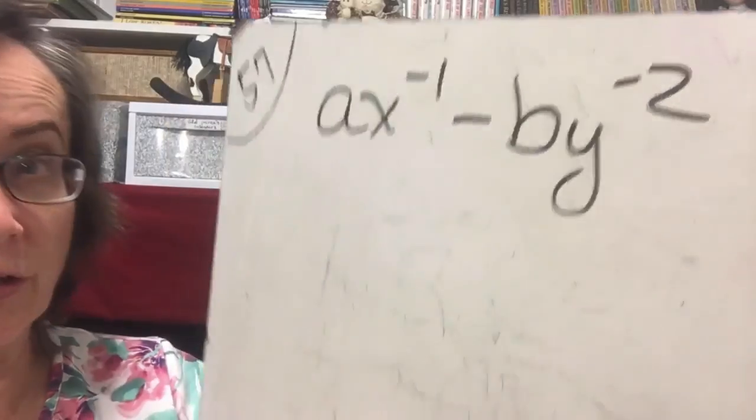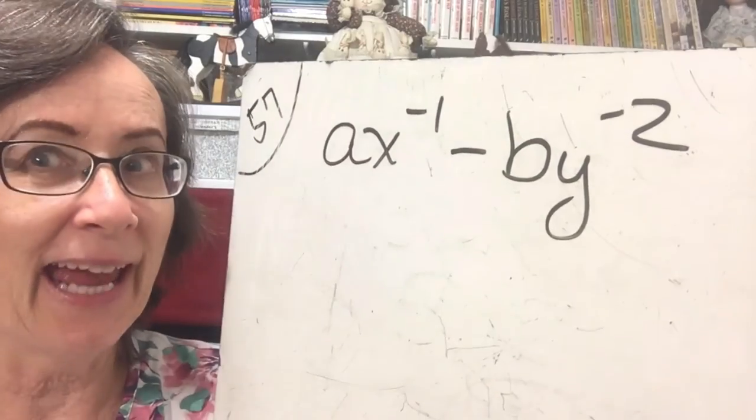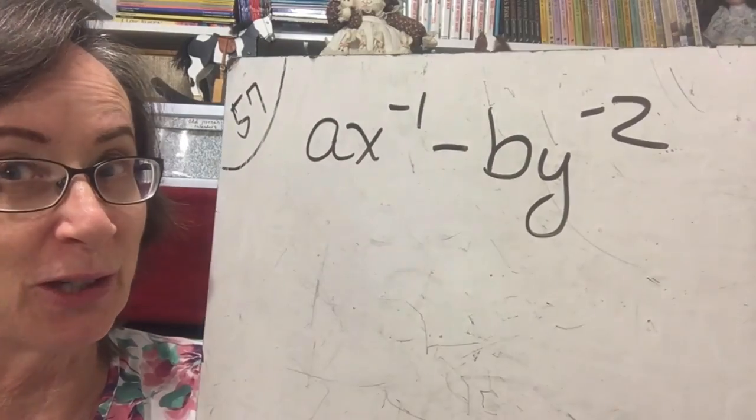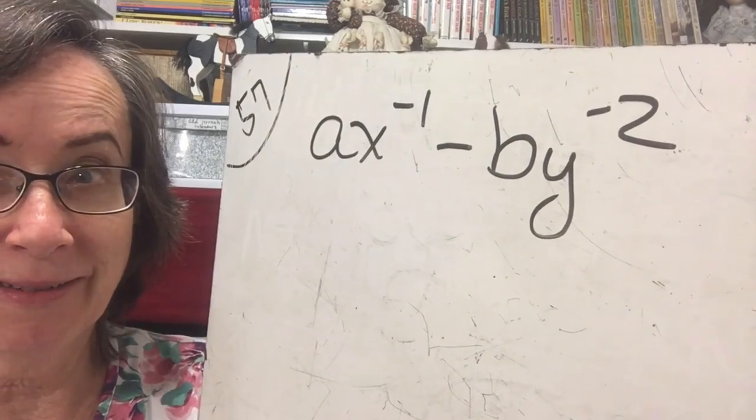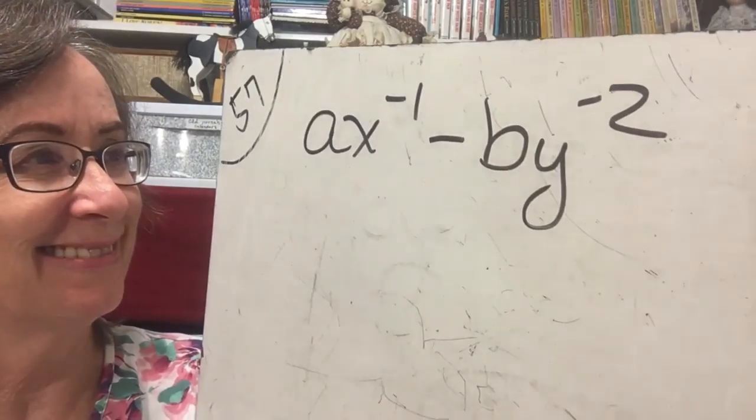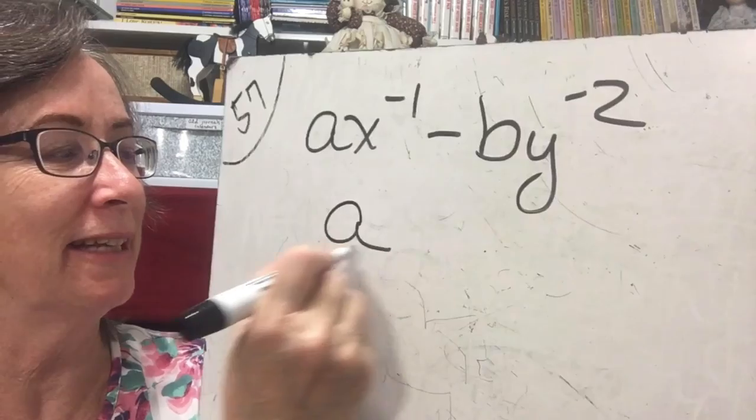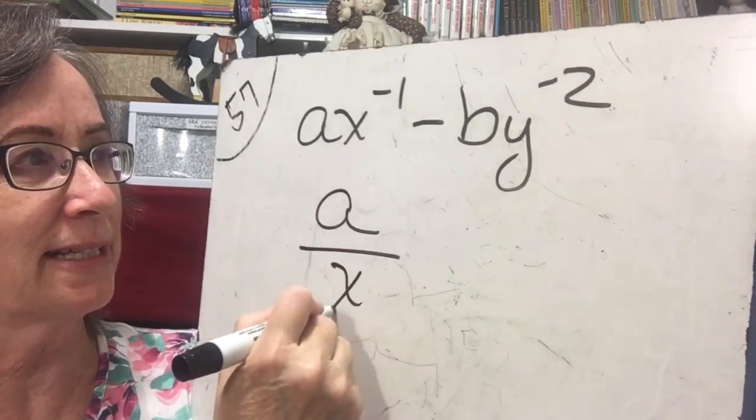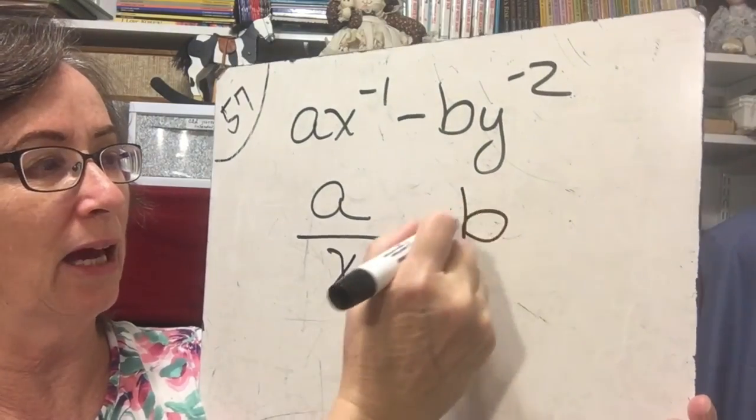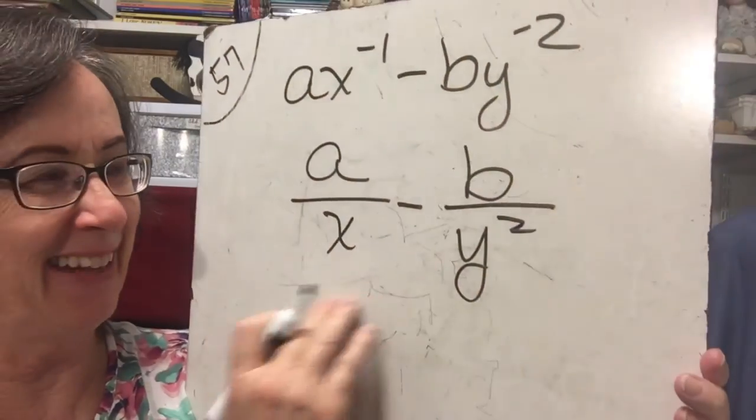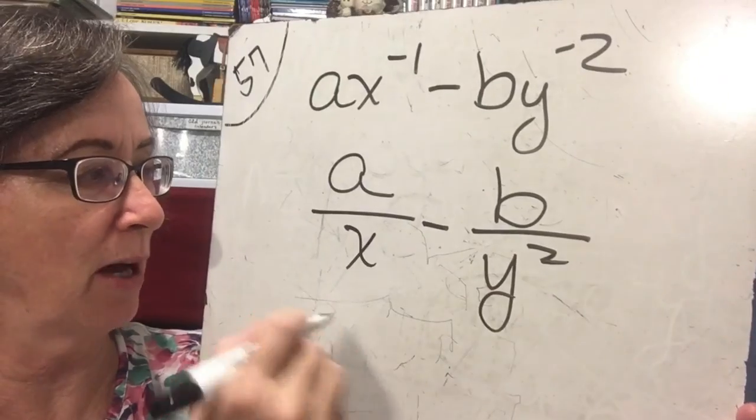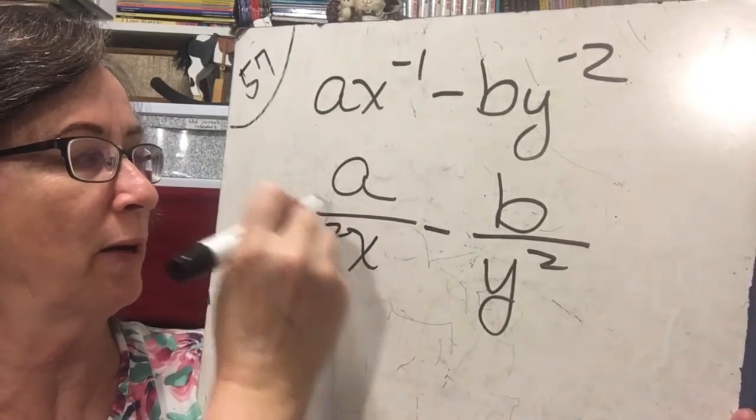Here is your first practice problem so copy it down and go see if you can do it without looking at my work. Pause your video. Alright, so hopefully you did that so let's do this a over x minus b over y squared and I don't have anything in common but I have to make them common so I'm going to multiply by y squared y squared and x and x so now my denominator